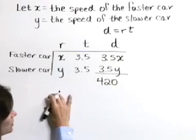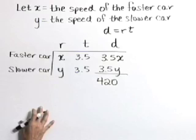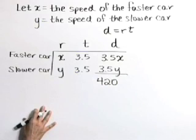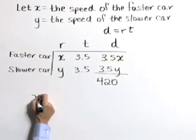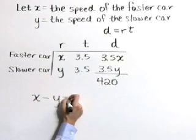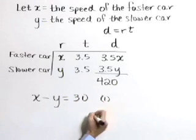Now we're ready to write our system of equations. We're given that the faster car travels 30 miles per hour faster than the slower car. So x is a larger number, and the difference x minus y is equal to 30. Let's call that equation 1.